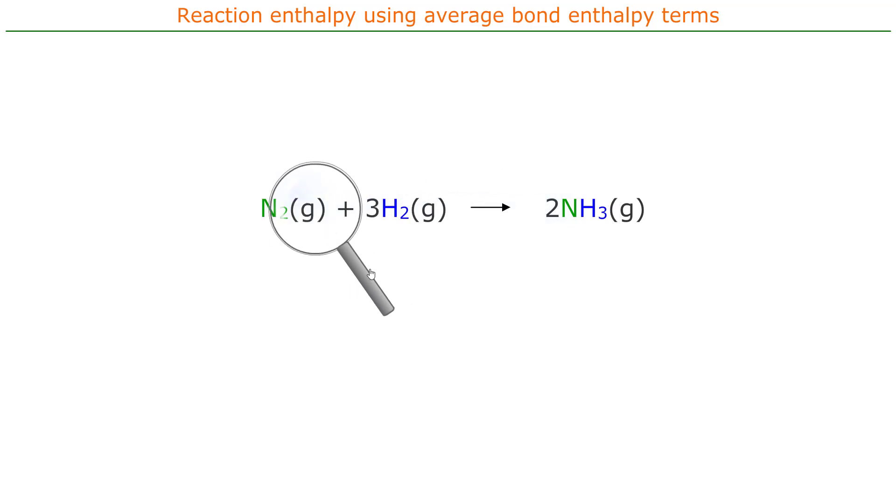In order for the nitrogen and the hydrogen to react, all of their bonds must be broken first of all, and then reassembled to give the ammonia bonds. Let's have a look at how this can happen.